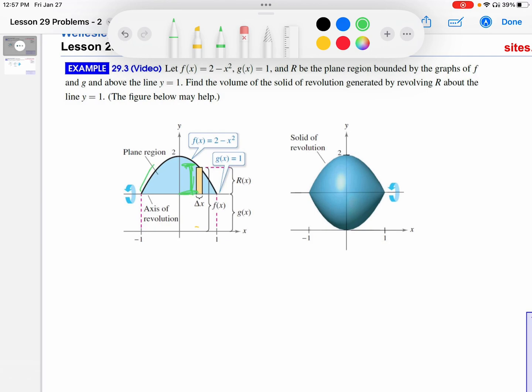Well, the function f of x is this black one. So that's the upper extent, 2 minus x squared. But the lower extent here is the actual axis of revolution, which in this case is y equals 1. So the radius is the function 2 minus x squared minus 1. Okay, so that's the big difference here.